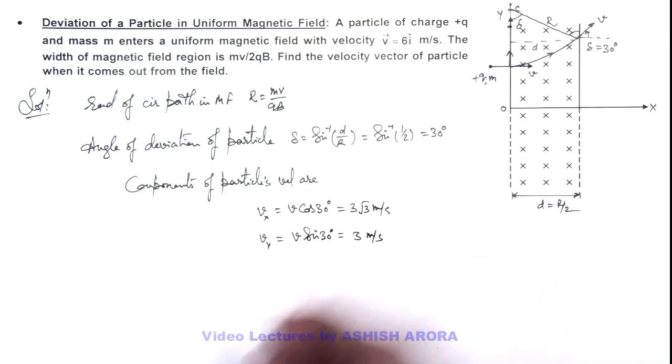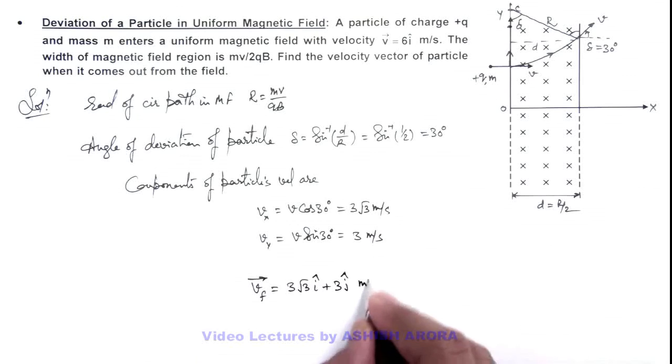So when it comes out, the final velocity vector we can write as vₓi + vᵧj, that is 3√3i + 3j meters per second. That will be the answer to this problem.